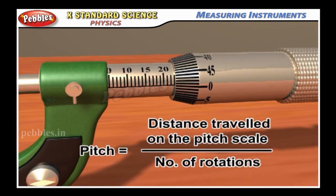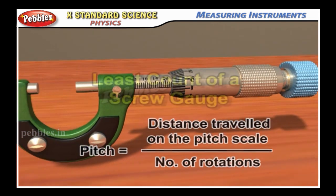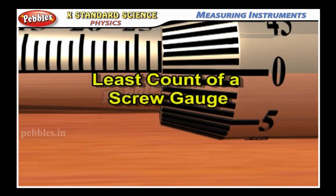distance traveled on the pit scale divided by number of rotations.